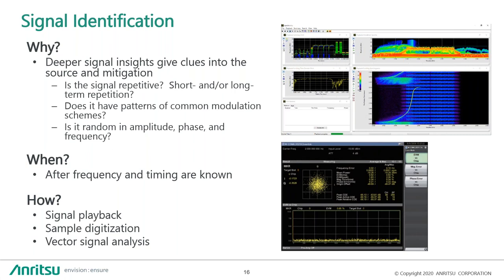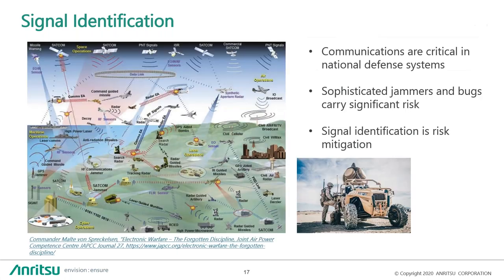In military defense, communications are critical. Sophisticated jammers can carry real risk. For example, if a radar aircraft is out monitoring land operations and that signal is jammed, it leaves the area vulnerable. Signal identification is a strong risk mitigation in these examples.